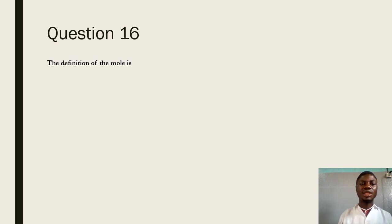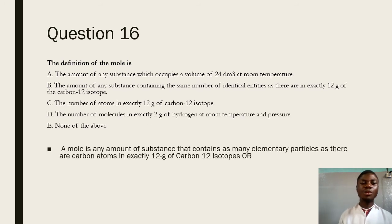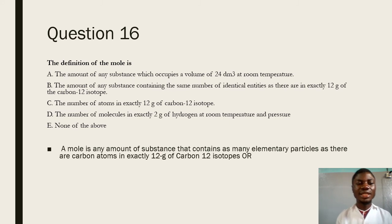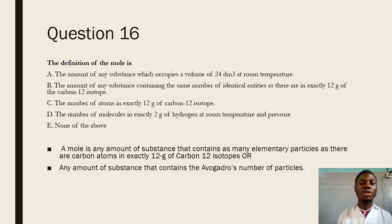Question 16 says: the definition of mole is — a mole is any amount of substance that contains as many elementary particles as there are carbon atoms in exactly 12 grams of the carbon-12 isotope. Looking at the alternatives, the best answer is B, which says: the amount of any substance containing the same number of identical entities as there are atoms in exactly 12 grams of carbon-12 isotope. The answer is B.